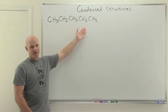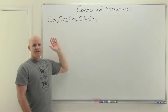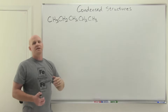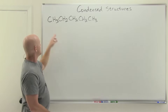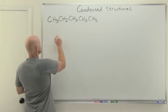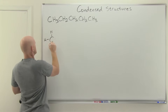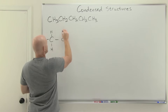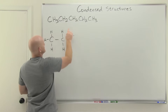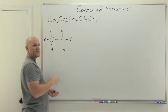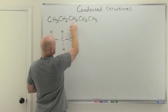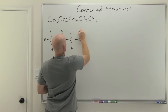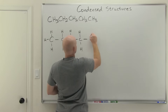All right, condensed structures. I've got an example on the board — organic chemistry is all about carbon, and a carbon chain is the backbone of most molecules. In a condensed structure, we list a carbon and immediately following it we list how many hydrogens are attached to it. So this first carbon is bonded to three hydrogens, then bonded to the next carbon, which is bonded to two hydrogens, then the next carbon bonded to two hydrogens, and finally the last carbon bonded to three hydrogens.